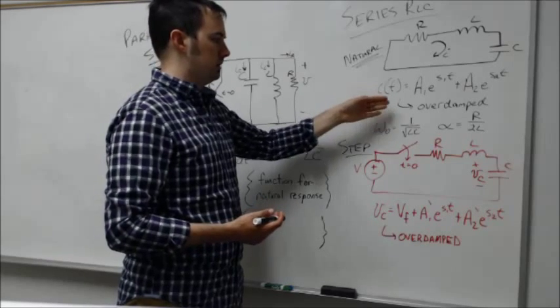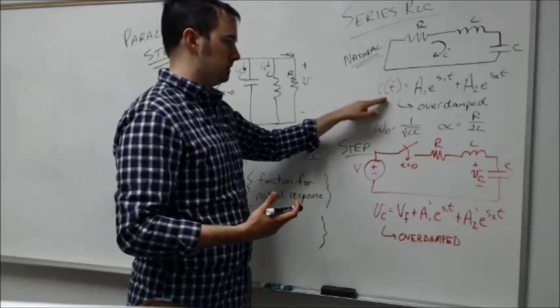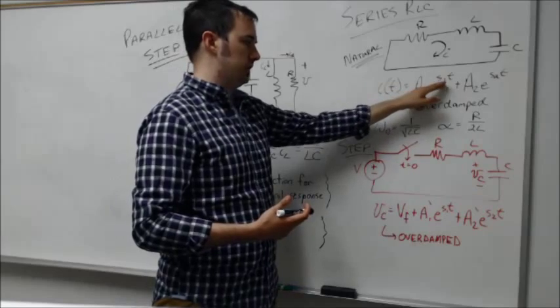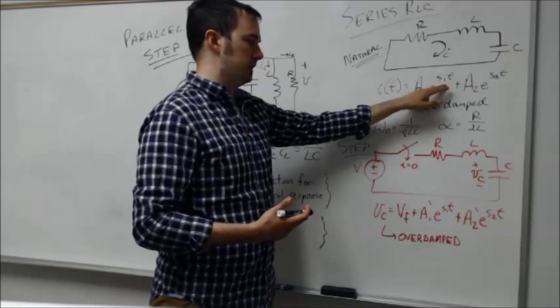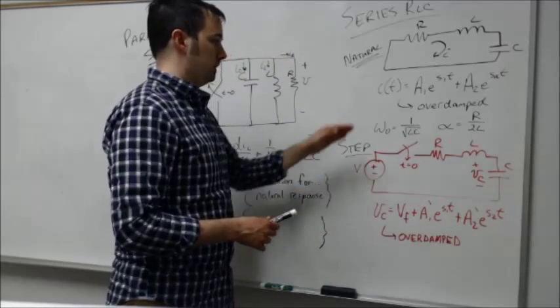The solutions here looked again similar to what we'd seen prior with the parallel case. Just looking at this one solution for the over damped response case, i of t is a1 times exponential s1t plus a2 times exponential s2t.